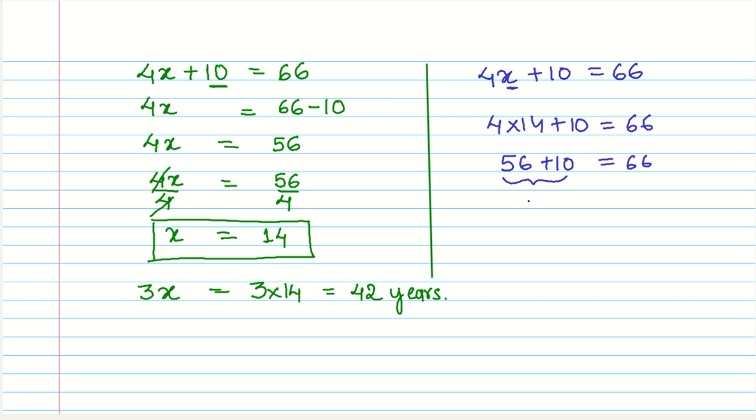4 times 14 is 56 plus 10 equals 66. Or you just solve this, you get 66 equals 66. That is the left hand side, which we started with here, and this is the right hand side. Both of these are same, right? So it holds true. Or this is just another way of saying that the sum of their ages after 5 years is equal to 66. So their present ages are 14 and 42 years.